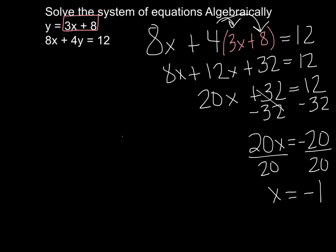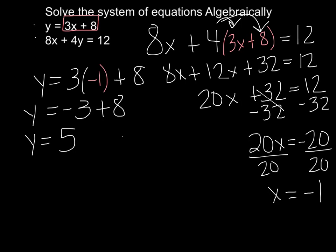So now that I know my x, I'm going to take it into either one of these two equations at the beginning. And instead of writing x, I'm going to write negative 1. So y equals 3 times negative 1, plus 8. So 3 times negative 1 is negative 3. So y equals negative 3 plus 8. Negative 3 plus 8 is 5. So y is equal to 5.